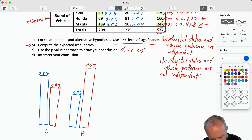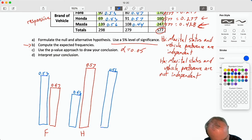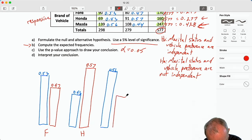Now for the Mazda, we have 56% for married. And for single, 44%. And that's for the Mazda.